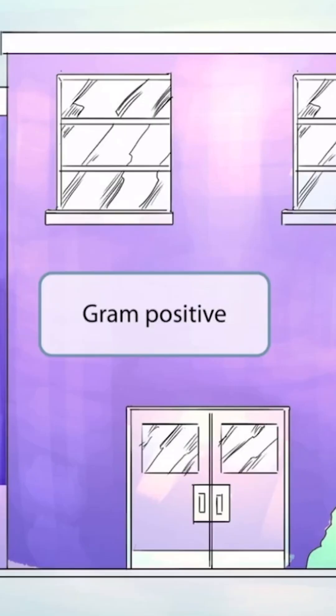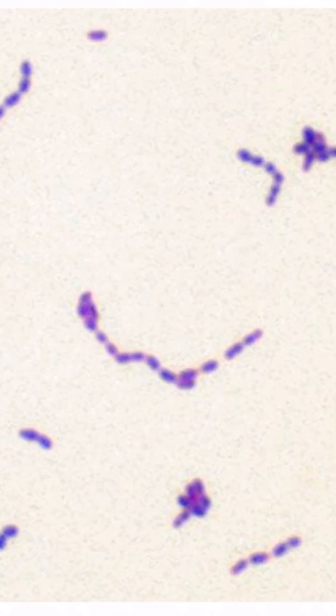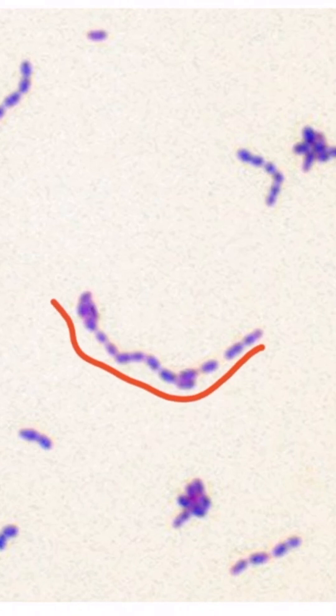Before we get too far, you should already have noticed the background. Can you see how we've used a lot of purple and blue colors? That's because this is a gram-positive organism. This is a gram stain of streptococci. Notice that the organism stains purple, which is why it's a gram-positive organism. Also notice that the bacteria are circular or cocci-shaped, and they form long continuous chains. The unique morphology of cocci in chains gives the organism the name streptococci.